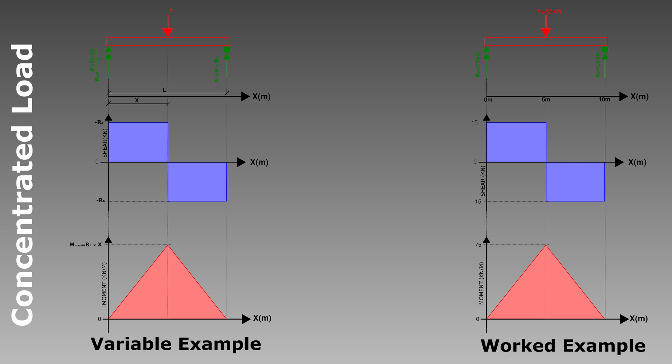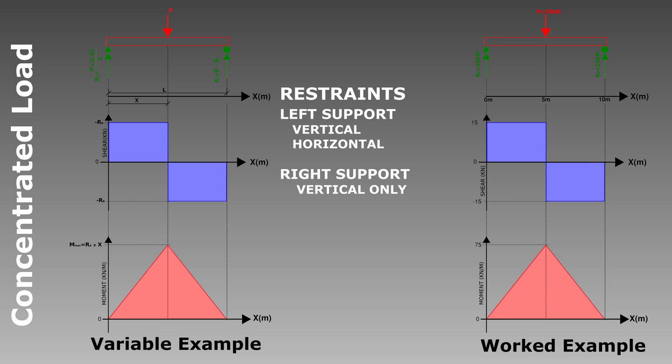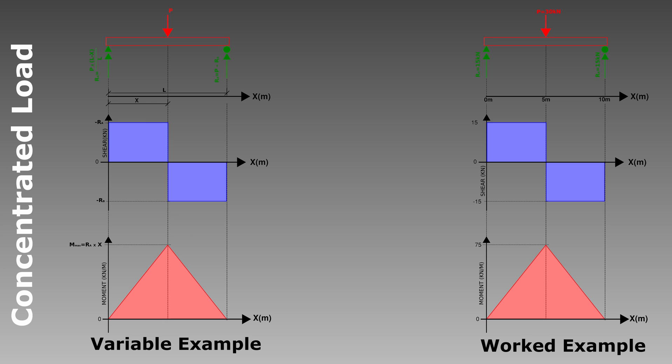Let's get into drawing bending moment and shear force diagrams. We start by drawing our free body diagram for a simply supported beam with a pin on the left, a roller on the right, and a point load in the middle. We have restraints both vertically and horizontally for the pin and only a vertical restraint for the roller. Since the load is vertical, there is no net horizontal force, and therefore the horizontal force on the pin must equal zero.